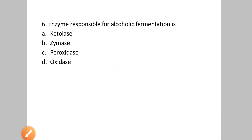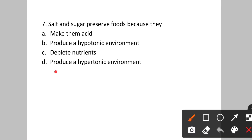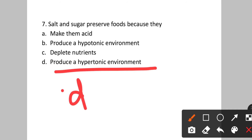Question number seven: Salt and sugar preserve foods because they — option A: make them acid. B: produce a hypotonic environment. C: deplete nutrients. D: produce a hypertonic environment. Salt and sugar are used to preserve foods because they produce a hypertonic environment. Option D is the correct answer. Do not confuse hypertonic with hypotonic.